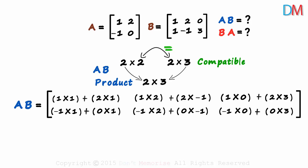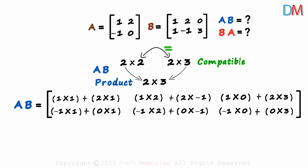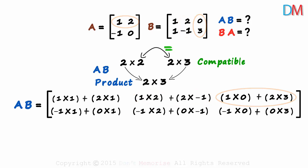It's quite easy to remember: one-one means first row, first column; one-two means first row, second column; one-three means first row, third column — and so on for each element position.